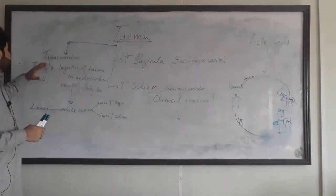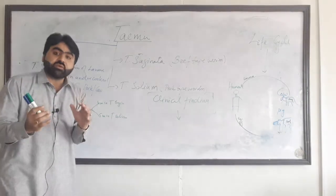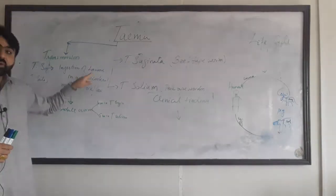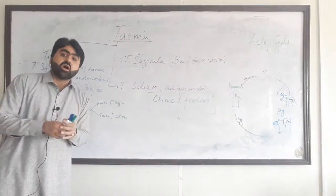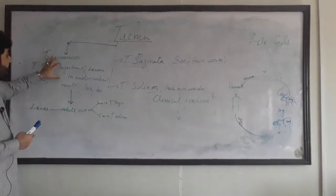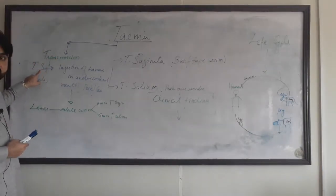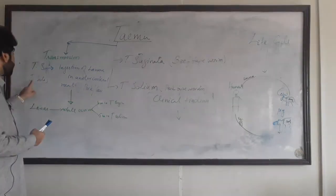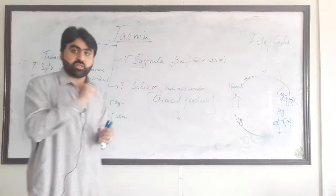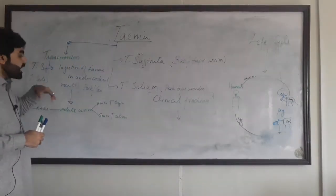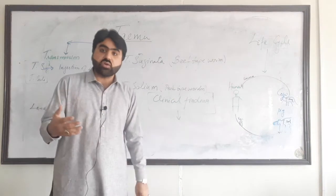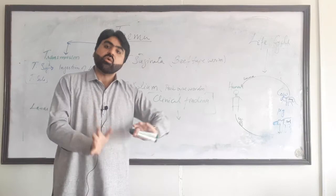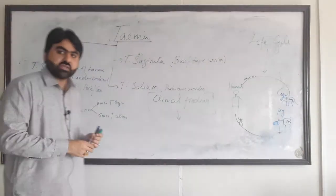These two species, Taenia solium and Taenia saginata, can be transmitted to human beings by ingestion of larvae present in undercooked or raw meat of cow in case of Taenia saginata, and undercooked or raw meat of pig or pork in case of Taenia solium. There is also another transmission route for Taenia solium: the eggs can be transmitted from human to human.